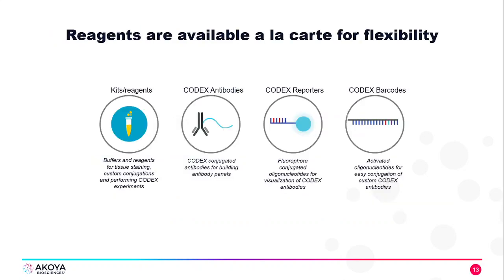Codex reagents include all of the kits and reagents needed for running the instrument and the fluidics. The Codex antibodies include a number of different antibody configurations, including inventoried antibodies that can be purchased from AKOYA. Codex reporters allow us to detect those antibodies once they've bound to the tissue section. And Codex barcodes can be conjugated to the antibodies that we do not have in inventory.